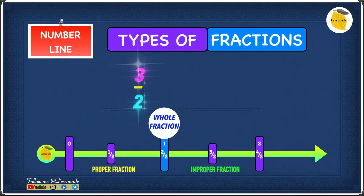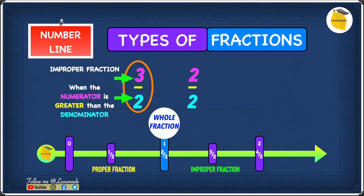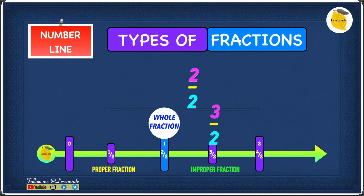Now let's have a look at the two fractions we're going to compare: 3 over 2 and 2 over 2. Let's compare 3 over 2 first. The numerator is 3 and the denominator is 2. We know that the numerator is greater than the denominator, so 3 over 2 is an improper fraction. An improper fraction is when the numerator is greater than the denominator. On the number line, 3 over 2 goes where the improper fraction is.